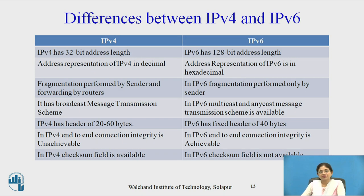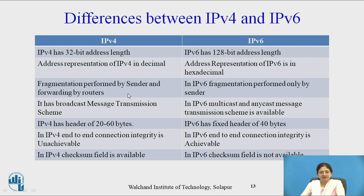Now let's see the differences between IPv4 and IPv6. IPv4 has 32-bit address length, whereas IPv6 has 128-bit address length. In IPv4, address representation is in dotted decimal format, but in IPv6 it is in hexadecimal notation format. In IPv4, fragmentation is performed by sender and forwarding routers, whereas in IPv6 fragmentation is performed by the sender only. IPv4 has broadcast message transmission, whereas IPv6 has multicast and anycast message transmission. IPv4 has a header of 20 to 60 bytes, whereas IPv6 has a fixed header of 40 bytes.